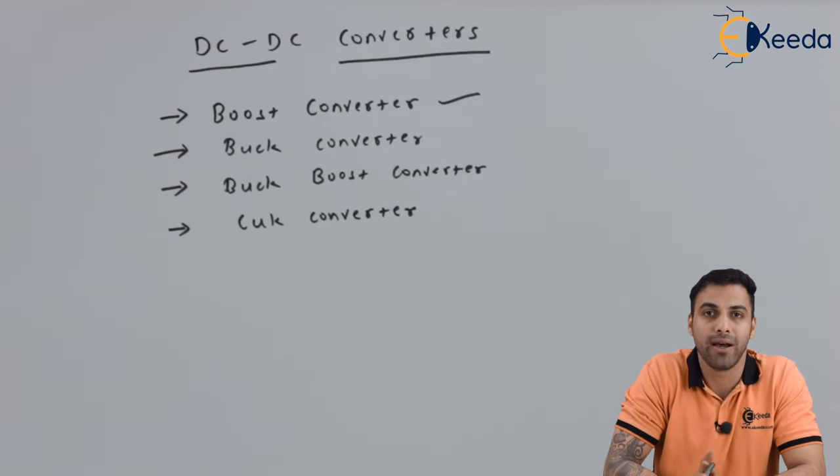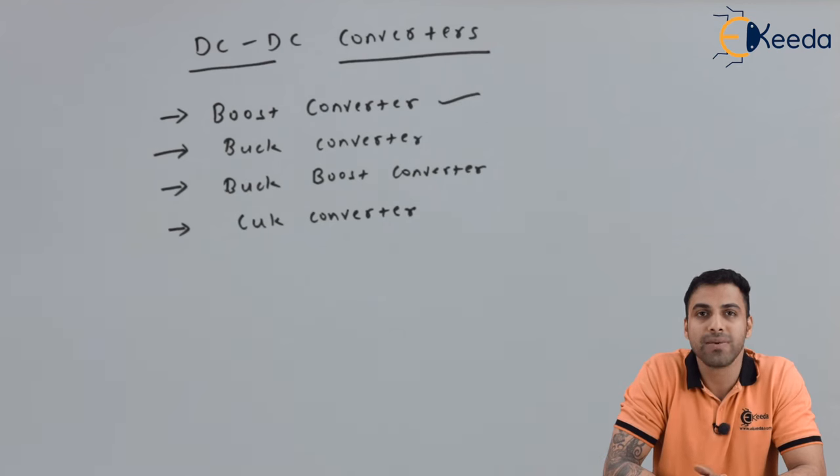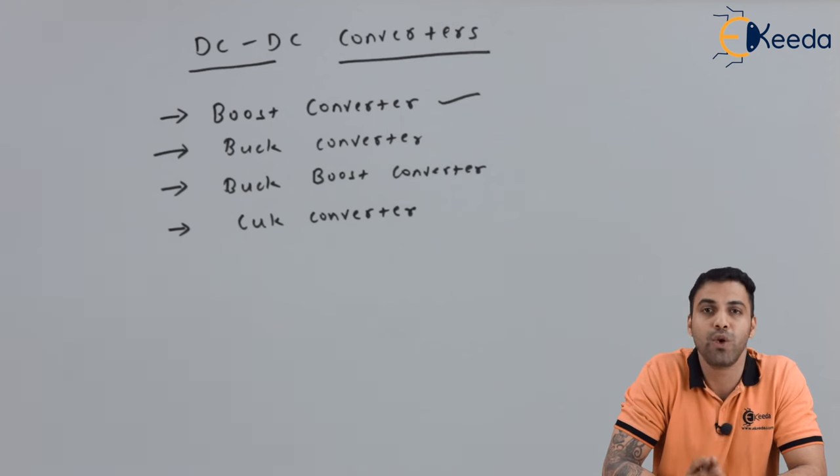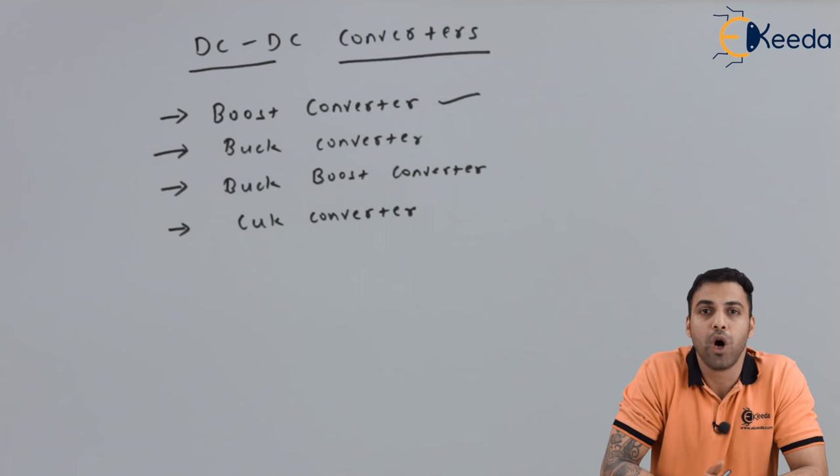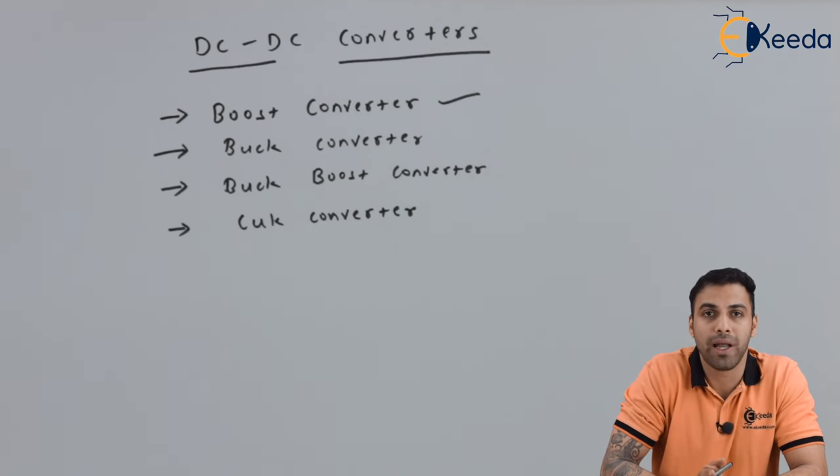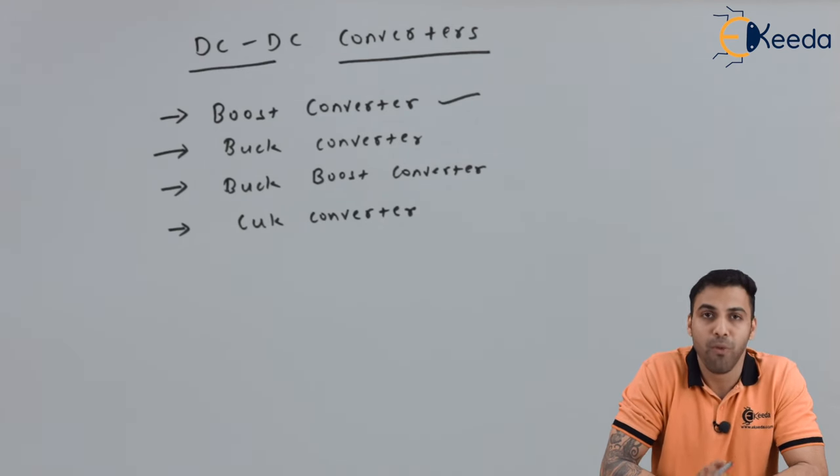So friends, let's start with a converter which converts a high value of DC input to comparatively low value of DC output. That is called buck converter. To operate any of these converters, we need a switch that can be controlled through a gate pulse. That gate pulse enables the switch to turn on and off, and ultimately we will be getting the output. That output might be more than the input voltage or the output might be less than the input voltage.